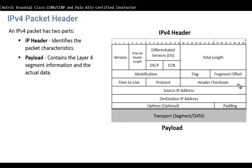The next field is Differentiated Services, also called Type of Service. It is used to determine the priority of each packet. Not all packets have the same priority — if there's a queue, we want some packets to jump ahead. For example, voice and video packets go to the front of the queue, while torrent packets go to the back.